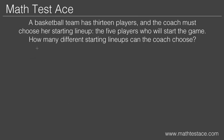Let's imagine that we're the coach. When we choose the first player for the starting lineup, we have 13 choices, so we write down 13. For the second player, one player is already taken, so there are 12 choices left. Let's write down 12.